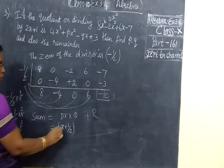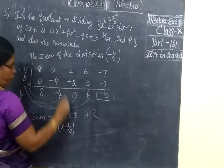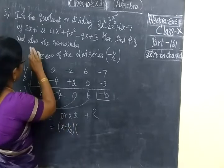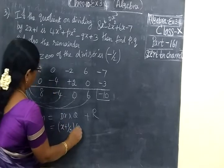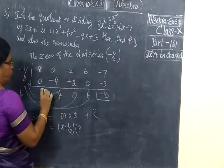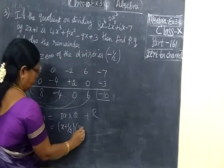2x plus 1, so x plus half. Then 2. It is 8 power n, power 4. This is power 3.